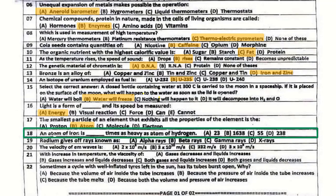Question number 18: An atom of iron is how many times as heavy as the atom of hydrogen? The correct answer is 55 times — iron's atom is 55 times as heavy as the atom of hydrogen.